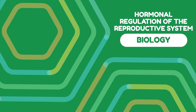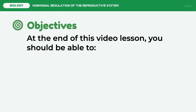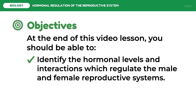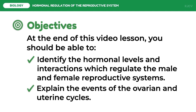In this lesson, we are going to discuss the hormonal regulation of the reproductive system. At the end of this video lesson, you should be able to identify the hormonal levels and interactions which regulate the male and female reproductive systems, and explain the events of the ovarian and uterine cycles.